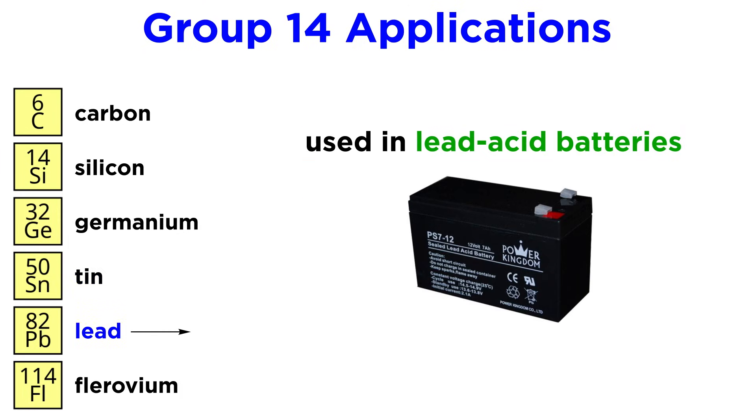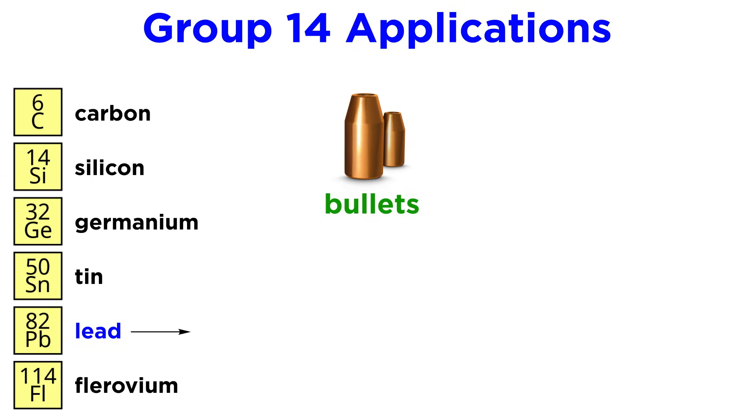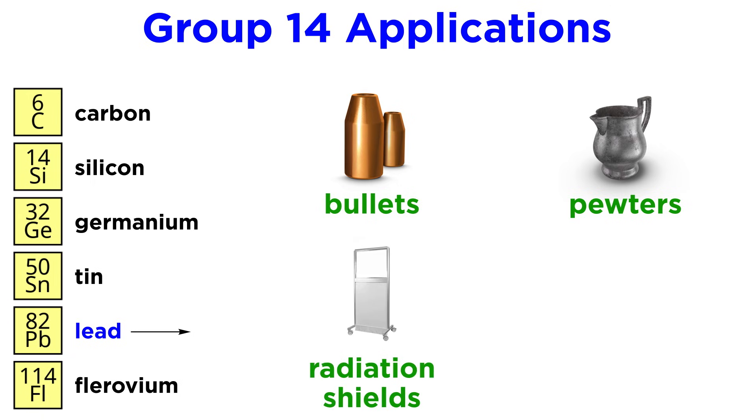Lead has tremendous application in lead-acid batteries. These are capable of delivering high currents and were among the first rechargeable batteries. Lead is used in bullets due to its high density while being soft enough to not jam the barrel. Lead is also used in pewters, in radiation shields, and was long used for pipes as these are easy to weld and repair and they do not corrode very easily.